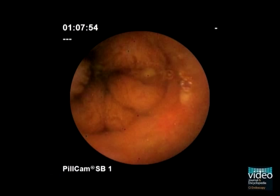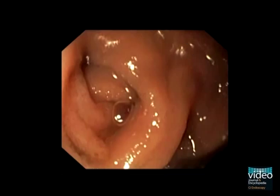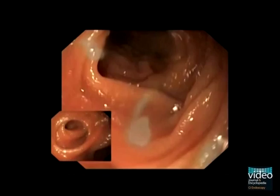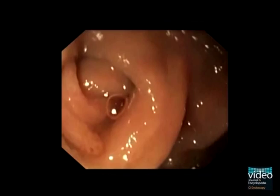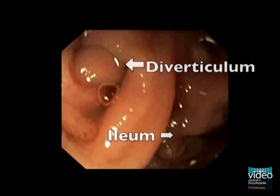In this 21-year-old patient, capsule endoscopy had shown active bleeding in the distal ileum. Consecutive retrograde single balloon enteroscopy demonstrated a Meckel's diverticulum. When partially intubating the long diverticulum with the endoscope, an ulcer was seen. Gastric mucosa was not detected endoscopically, although it was diagnosed in the resected specimen.